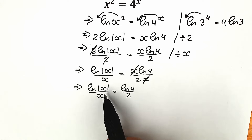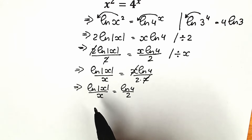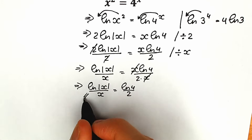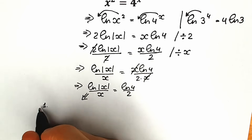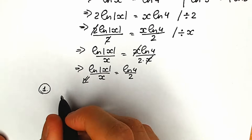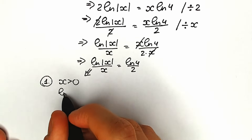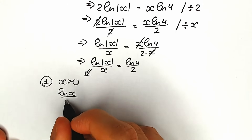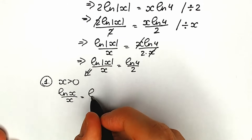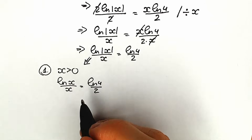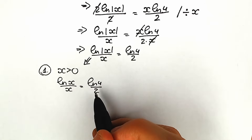We have absolute value of x, so x can be positive or negative. Let's start by solving when x is positive. When x > 0, the absolute value drops and we have: ln(x) / x = ln4 / 2.